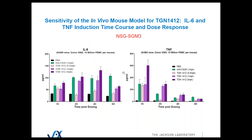This is just one slide to put things in context. This is done in the SGM3 mouse. The Y-axis is peak picograms per mL, and the X-axis is time: one hour, two hours, four hours, and six hours. We're doing a dose response with TGN1412 analog, shown in pink to purple. You can see that for IL-6, it's peaking out around four hours post-drug treatment. Anti-CD3 is shown in green, getting about 125 picograms per mL, with about six hours being the peak in this experiment.